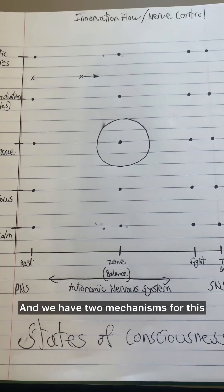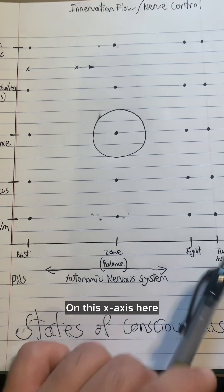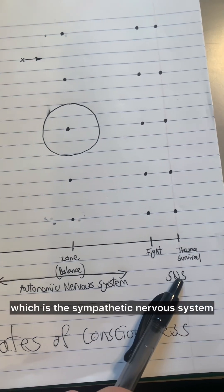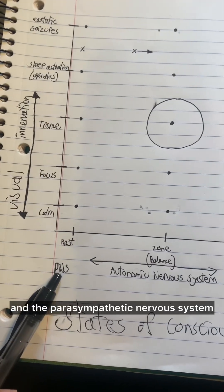We have two mechanisms for this. On this x-axis here, we have the autonomic nervous system and its two branches, which is the sympathetic nervous system and the parasympathetic nervous system.